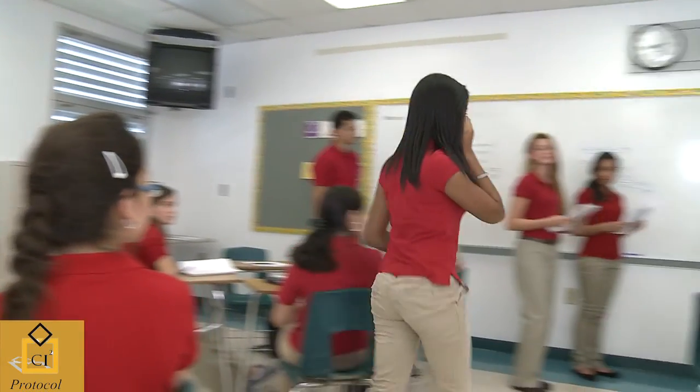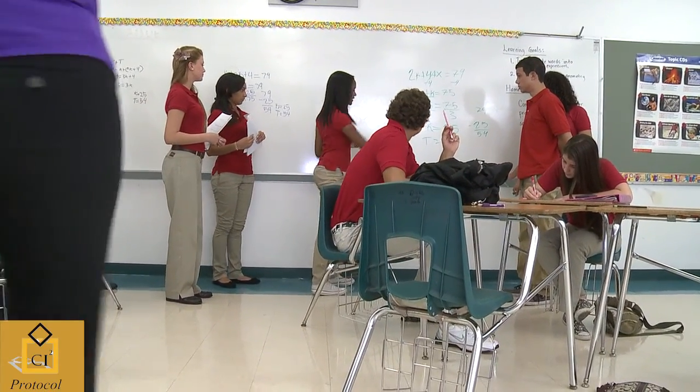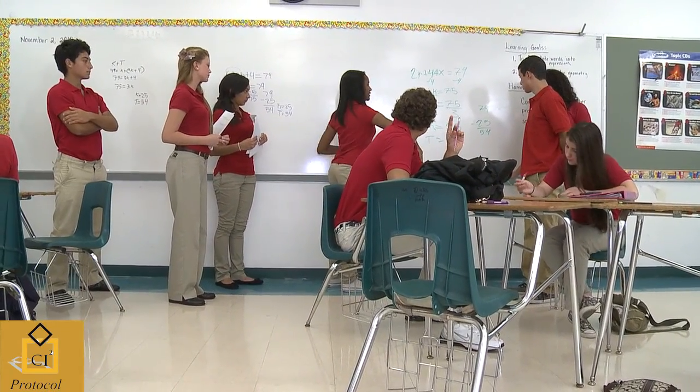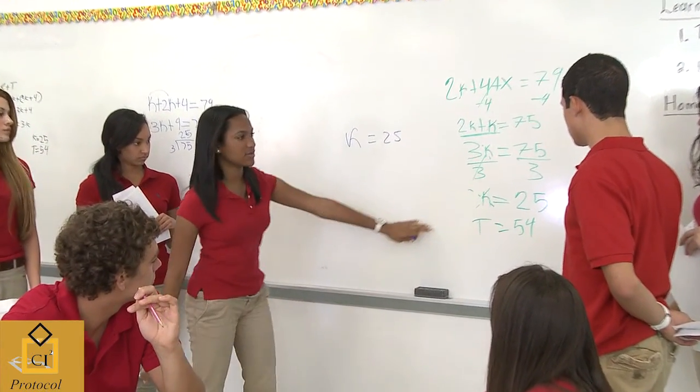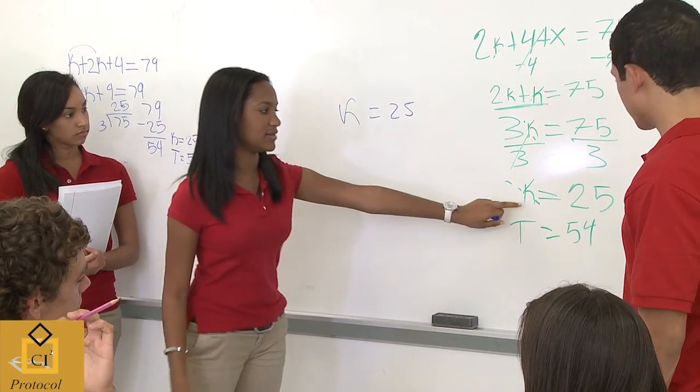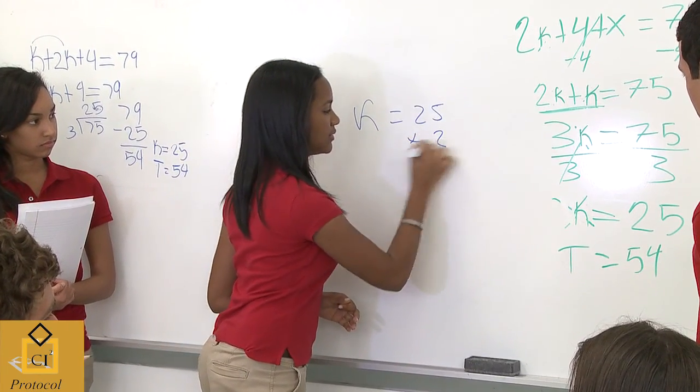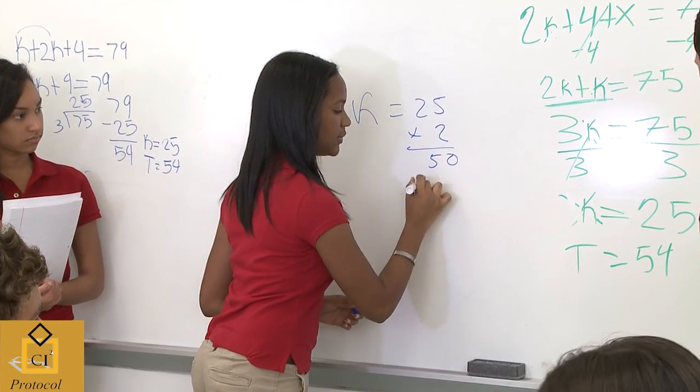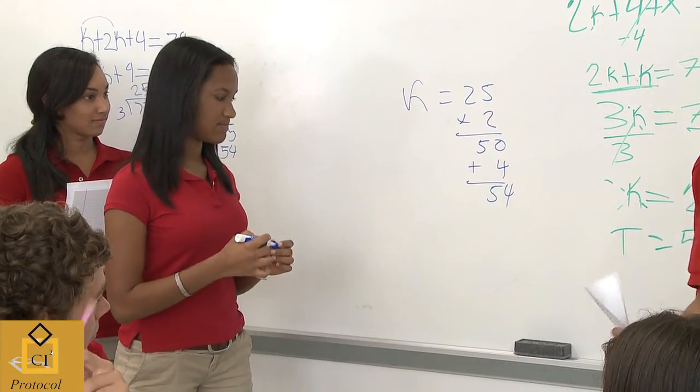She came up with a different method than the three groups up there right now. Listen to what she's saying. Just going through all the equation again. Since it tells you that Toshihiko is four more times two than Kyoko, then you do times two equals 50, and then plus the four equals 54, and that's Toshihiko's age. Very nice job.